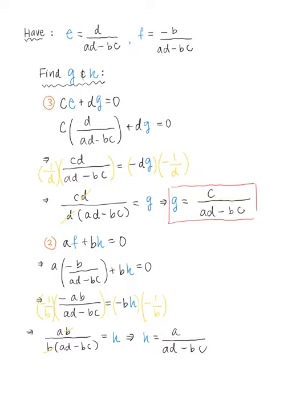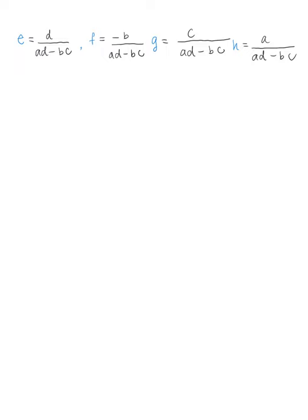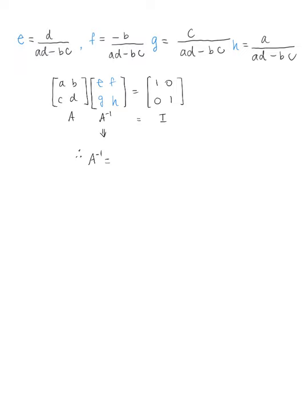So we've solved for E, F, G, and H. Recalling that A inverse is the matrix [E, F, G, H], I can factor out 1/(AD − BC) from each term. That gives us A inverse = 1/(AD − BC) times the matrix [D, −B, −C, A]. And that's the proof for why the inverse formula works.